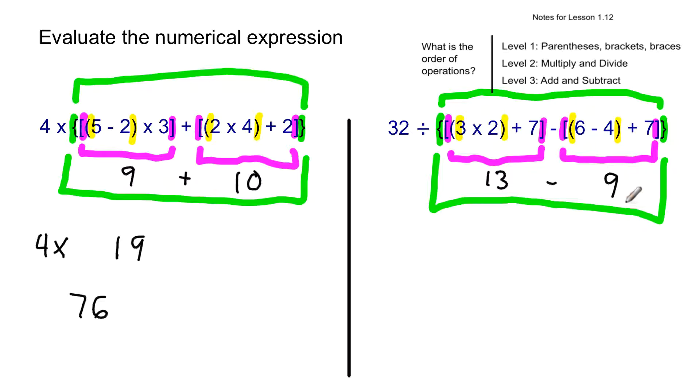So within the big green group, it's 13 minus 9. So we're going to rewrite the other parts now, 32 divided by 13 minus 9 is 4. And then 32 divided by 4 equals 8. So here's what you need. You need some highlighters. Go ask your teacher for some highlighters.